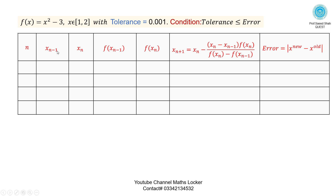Set up the iteration table with columns: n, x_{n-1}, x_n, f(x_{n-1}), f(x_n), x_{n+1}, and Error. First iteration: taking x_{n-1} = 1 and x_n = 2. f(x_{n-1}) = f(1) = 1² - 3 = -2. f(x_n) = f(2) = 2² - 3 = 1. Substituting these values in the formula, with x_n = 2, x_{n-1} = 1, f(x_n) = 1, f(x_{n-1}) = -2. After simplification, x_{n+1} = 1.66667.